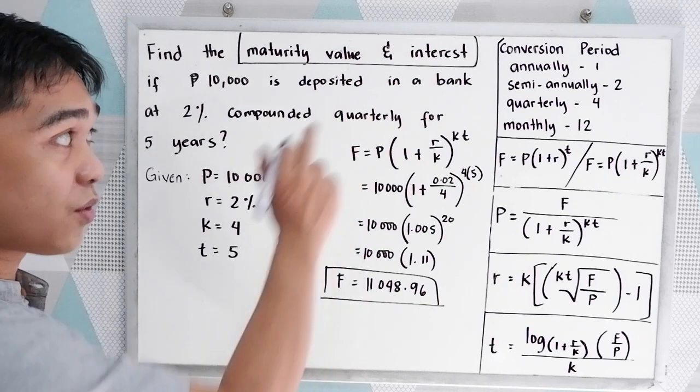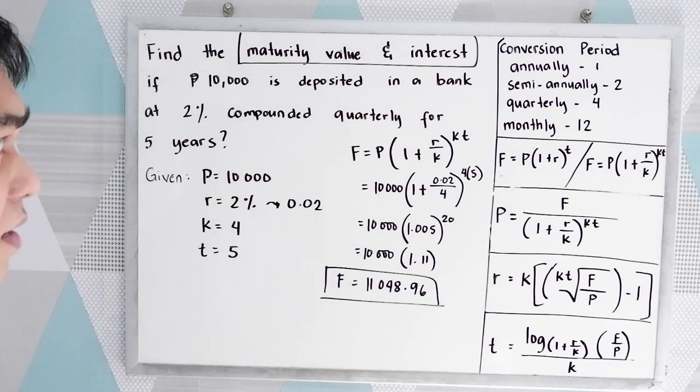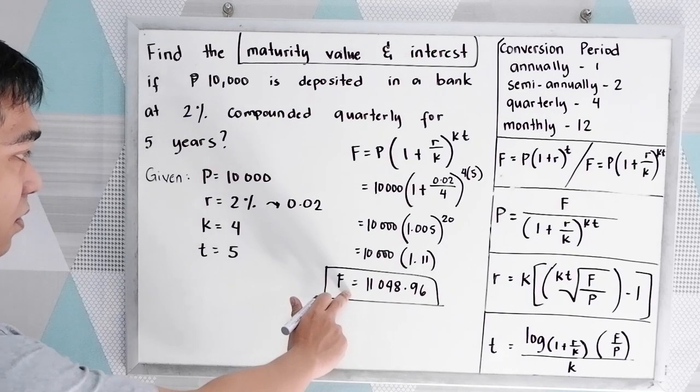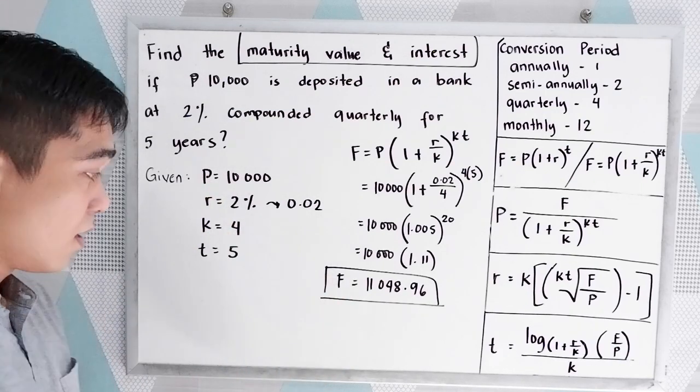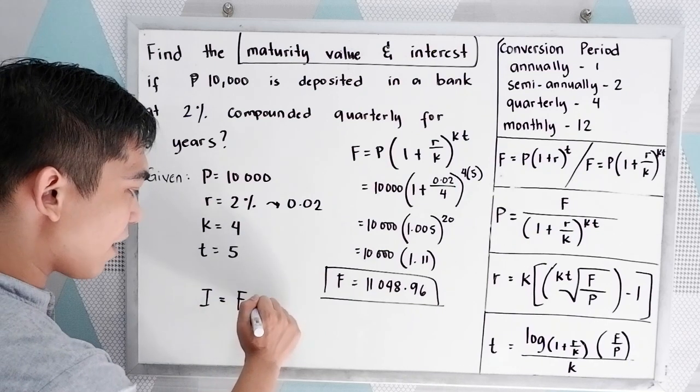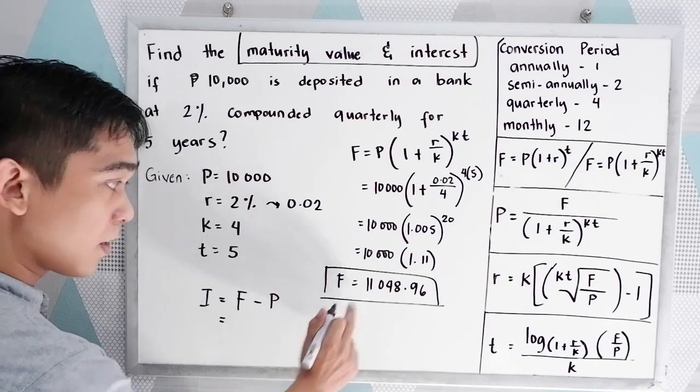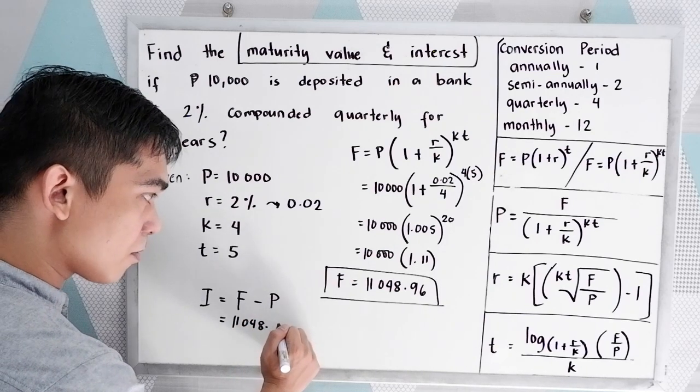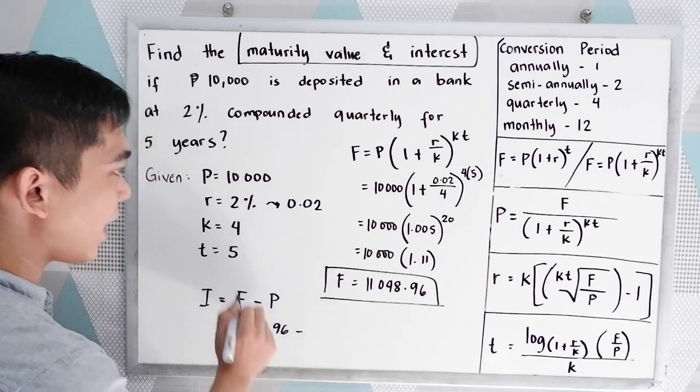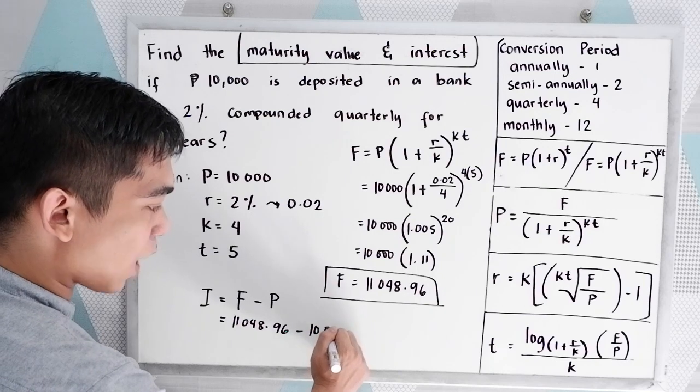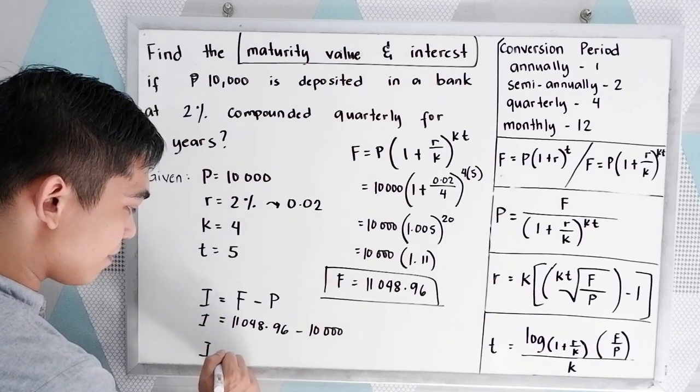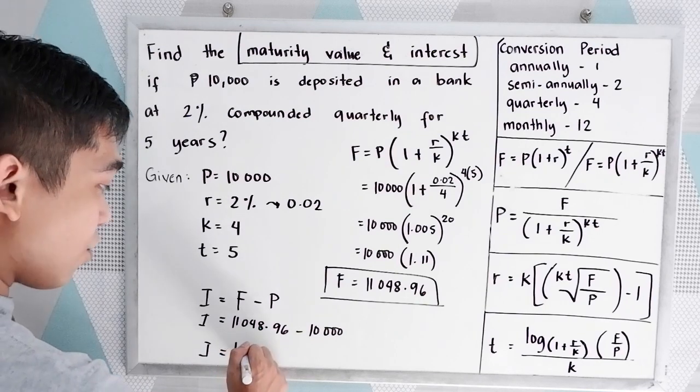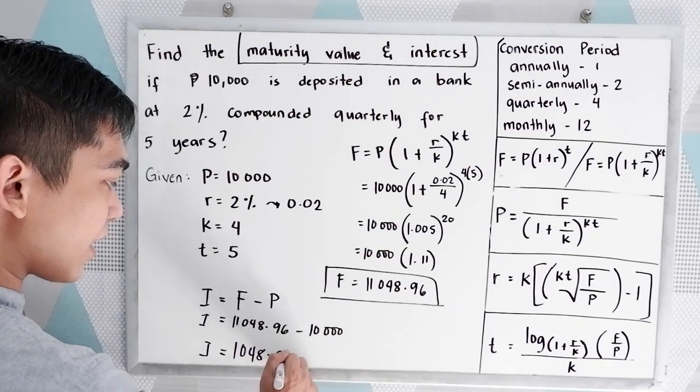Now, to get the interest, we just need to subtract the future value from the principal. So interest is equal to F minus P: 11,048.96 minus 10,000. This will be our interest. So that is 1,048.96.